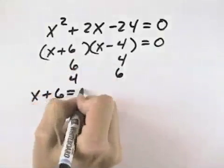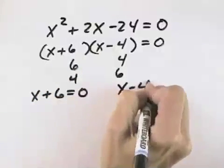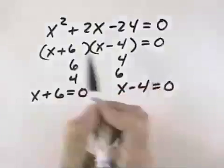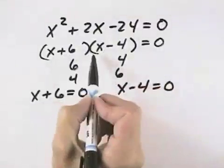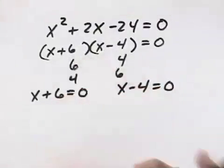So that means we can take x plus 6 and set that equal to zero and also take x minus 4 and set it equal to zero separately because this product will be zero anytime either of the factors are equal to zero.